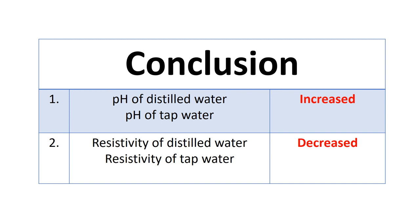In conclusion, I can make the pH of distilled water or the pH of tap water all increase, and the resistivity of distilled water and the resistivity of tap water all decrease.